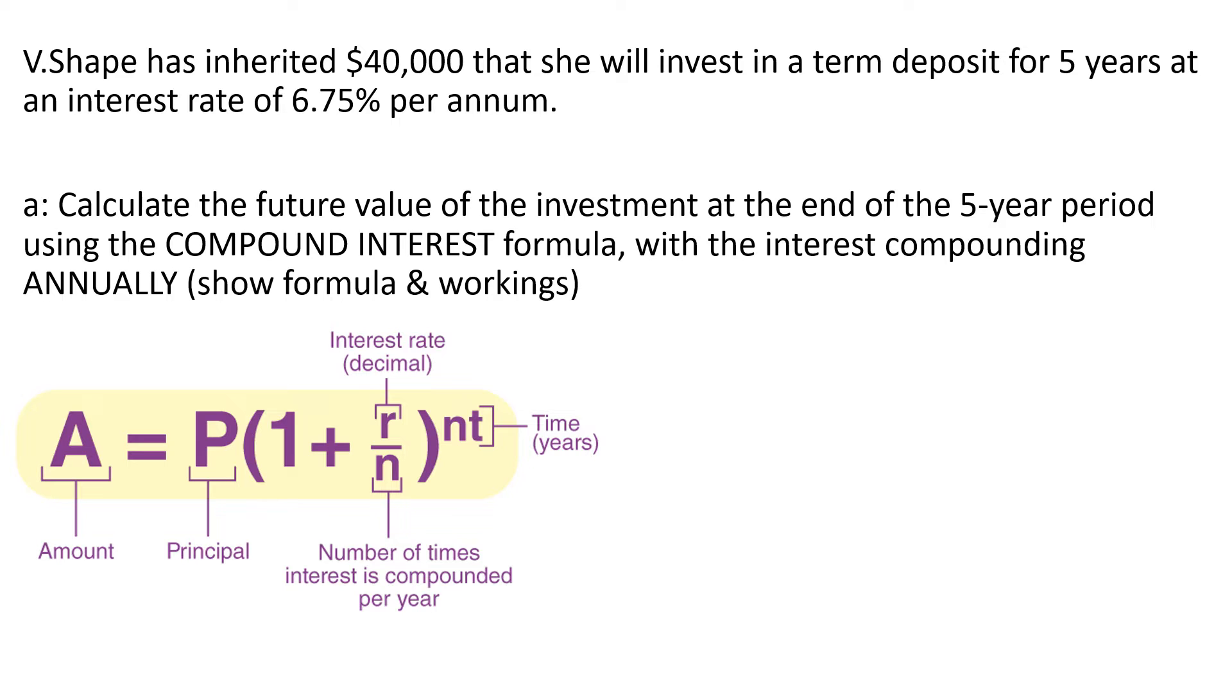So step three, write down your equation, 40,000, brackets, one plus. Now, because N is one, we don't need to worry about that. So we just go one plus 0.0675 to the power of five. And then if we let our fingers do the walking on the calculator, if we round to the nearest dollar, our future value will be $55,450.